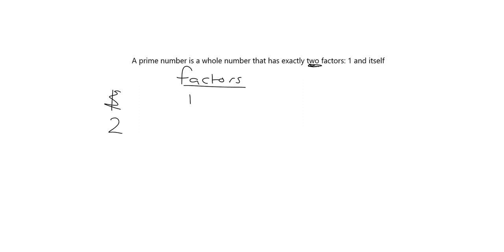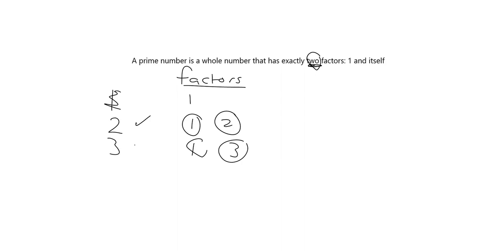What about two? What are the factors of two? One can go into two and two can go into two, but nothing else. So two is a prime number because it's got two factors, one and itself. What about three? Yes, because one goes in, two doesn't, three does — so one and itself, exactly two factors. It's a prime number.